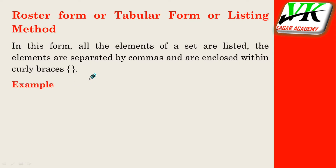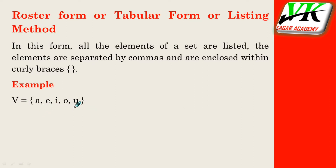एक example देखें बच्चों — जैसे यहाँ vowels का set देख पारे हैं कि सभी elements, सभी vowels लिए गए हैं: A, E, I, O, U और उनकी बीच में commas लगाये जाते हैं।